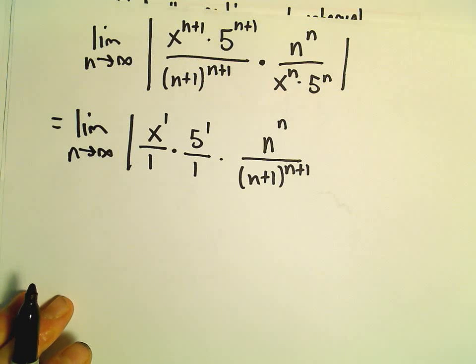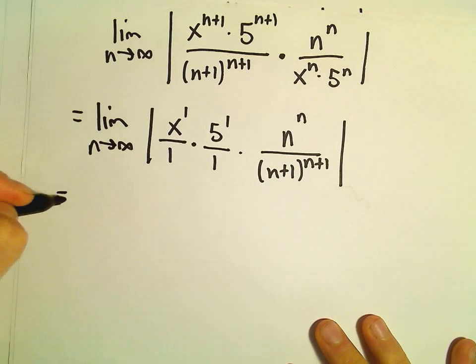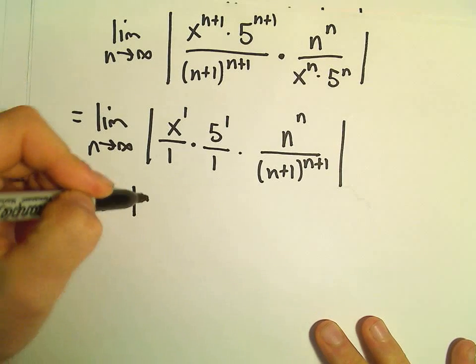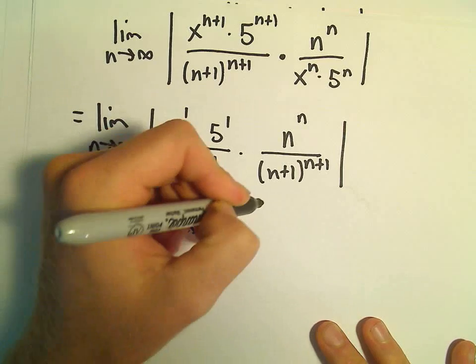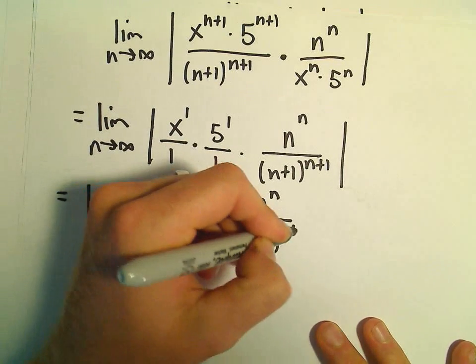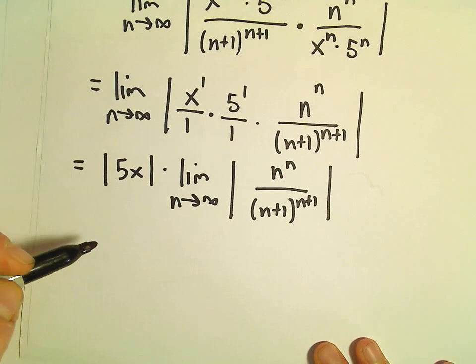So now, what would be the best way to try to clean this lovely thing up? We can pull the absolute value of 5x, we can at least pull that out front. Then we have the limit as n goes to infinity of n to the n over n plus 1 raised to the n plus 1 power.